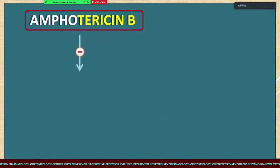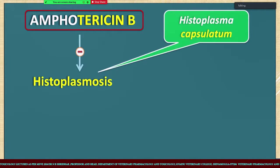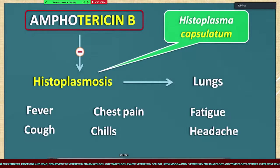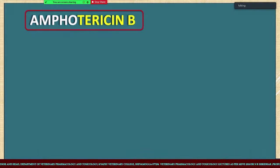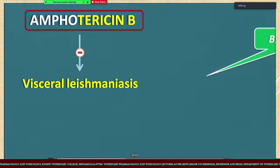Amphotericin B is also used in histoplasmosis caused by Histoplasma capsulatum, which can affect the lungs causing symptoms and is a dimorphic fungal infection. Apart from these, this drug is also useful in the treatment of visceral leishmaniasis, also called black fever.